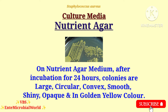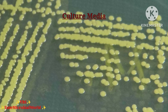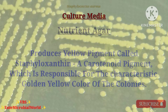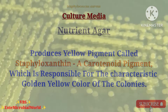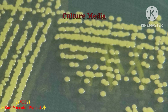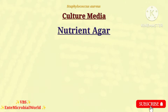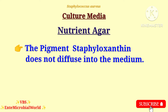On nutrient agar, after incubation for 24 hours, the colonies are large, circular, convex, smooth, shiny, opaque and in golden yellow color. Staphylococcus aureus produces the yellow pigment staphyloxanthin, a carotenoid pigment, which is responsible for the characteristic golden yellow color of the colonies. The pigment does not diffuse into the medium.